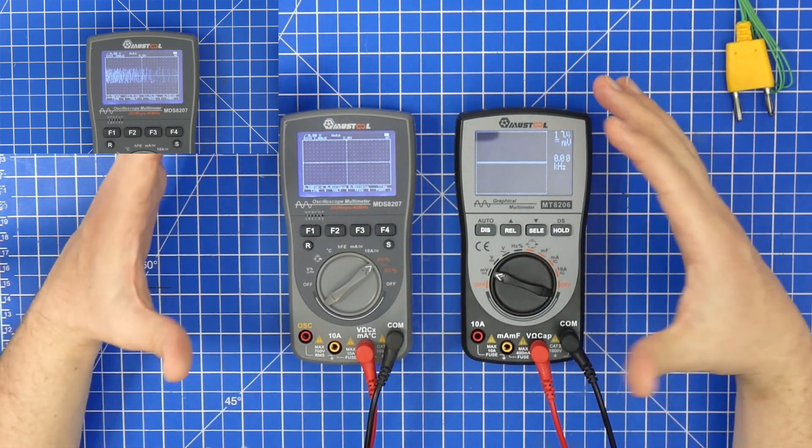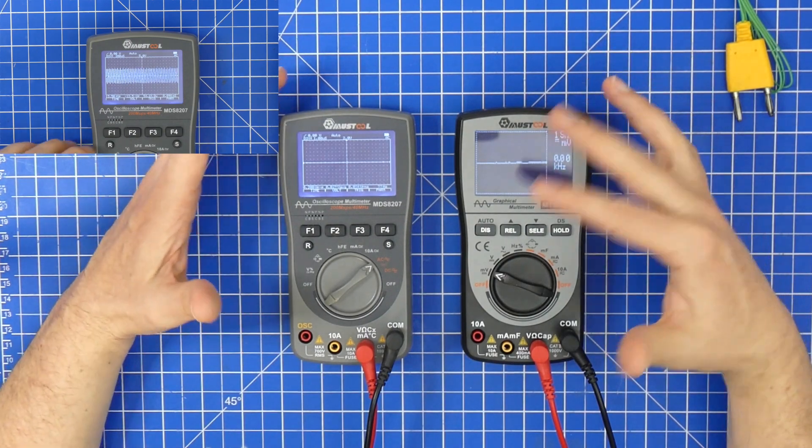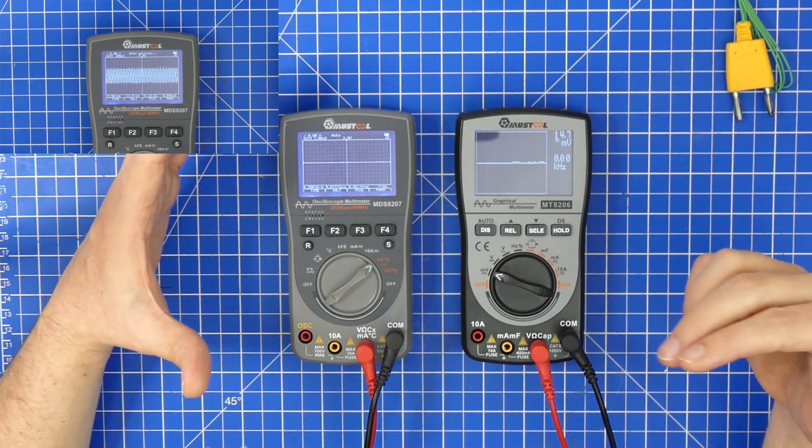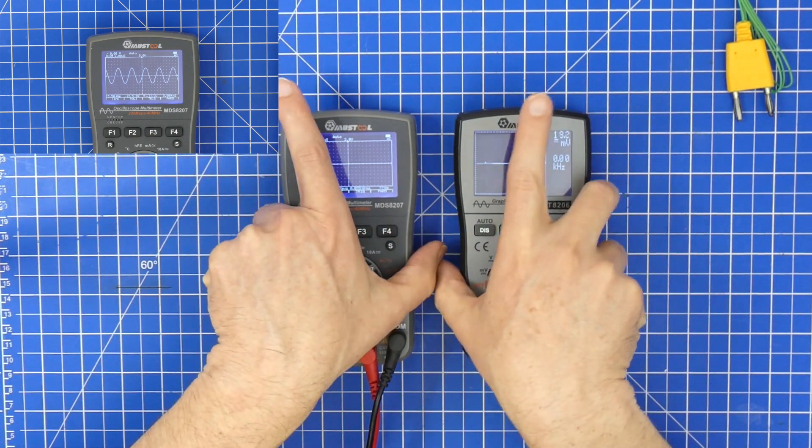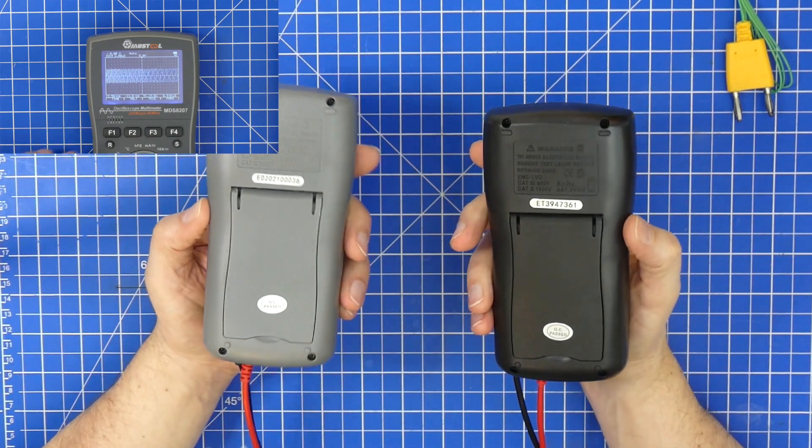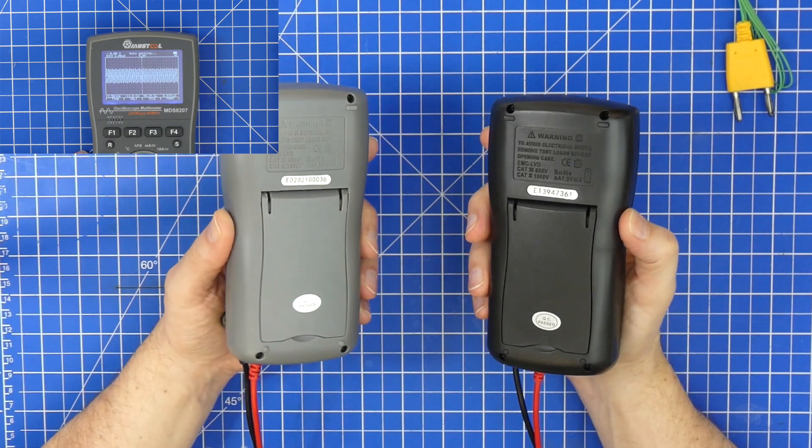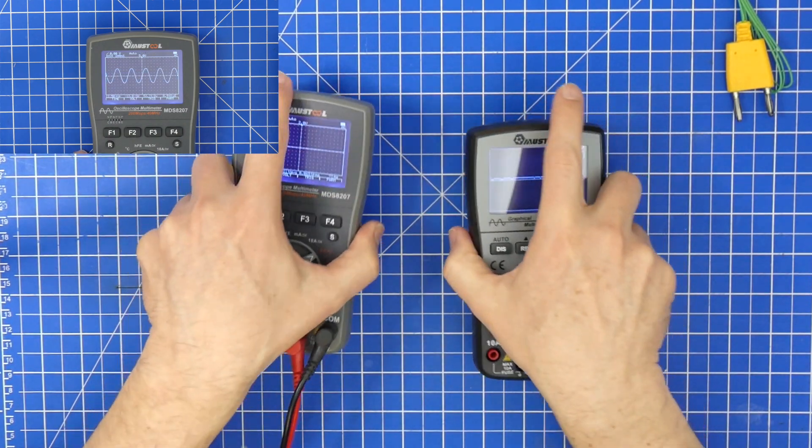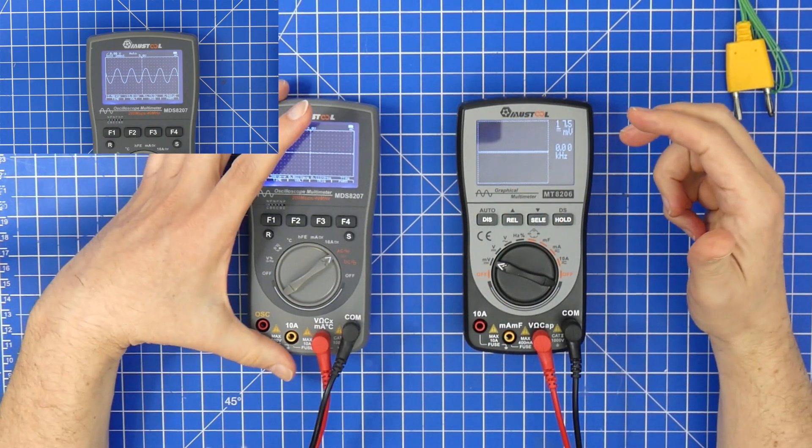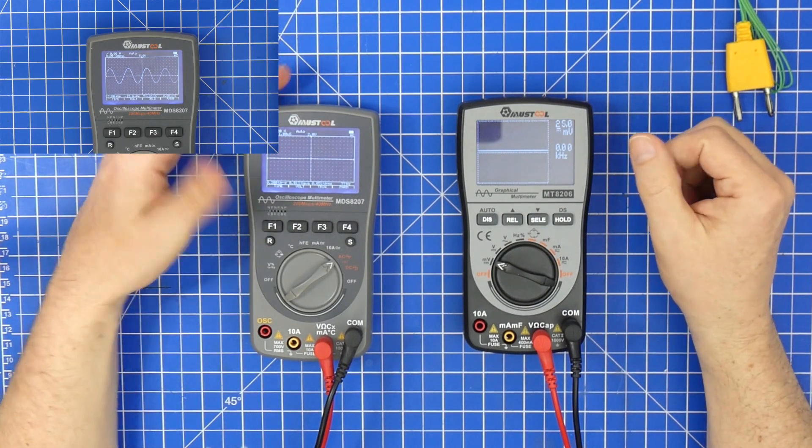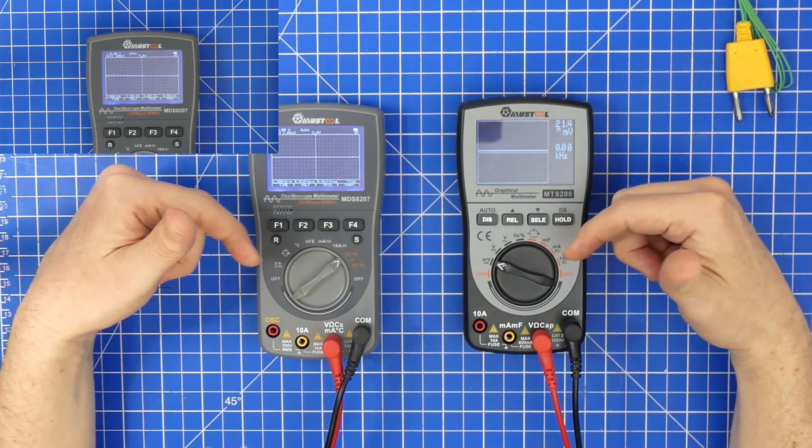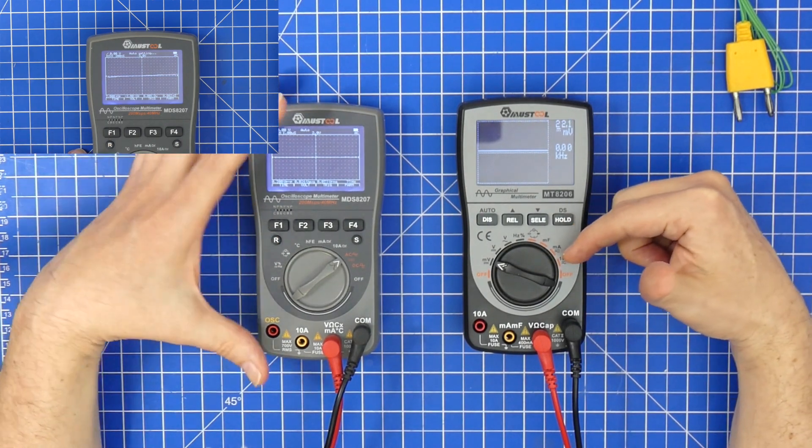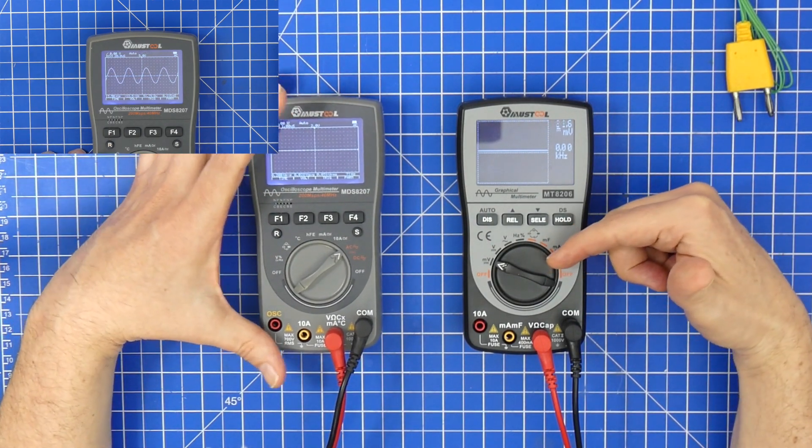While at the same time just being a really good handheld multimeter. What they didn't change was both of them use three double A batteries and I like that a lot more than I like the nine volt block batteries. First of all because these things do use more power and the nine volt block batteries are just really hard to get, they're pretty expensive and they don't hold out as good.